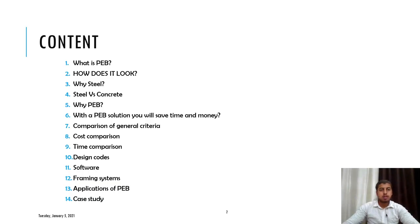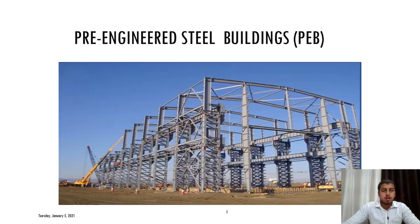These are the contents of how we will proceed in this presentation. Firstly, we will understand about PEB and how it looks, then why we use steel, then we will compare steel with concrete and then why PEB. We will have a quick overview and then I will explain how PEB saves money and time. Similarly, we will have cost comparison and time comparison. Lastly, we will have design codes and software related to it, and we will take some case studies to understand about PEB buildings on the ground.